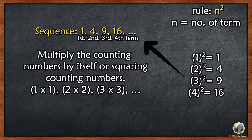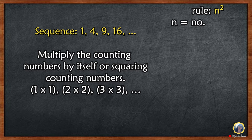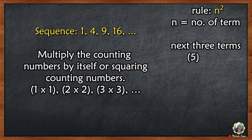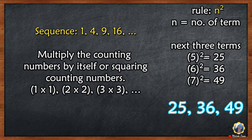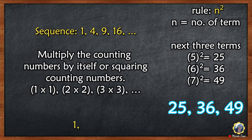Next is to get the next 3 terms. We're going to change the value of n into 5, 6, and 7. 5 squared is 25, 6 squared is 36, 7 squared is 49. So the next 3 terms are 25, 36, 49.